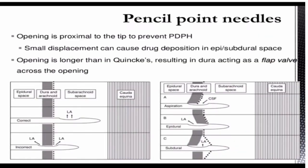With pencil point needles, the opening is proximal to the tip — designed to prevent PDPH. However, a small displacement can cause drug deposition in the epidural space rather than the subarachnoid space. The opening is also longer than in Quincke needles, resulting in the dura acting as a flap valve across the opening.